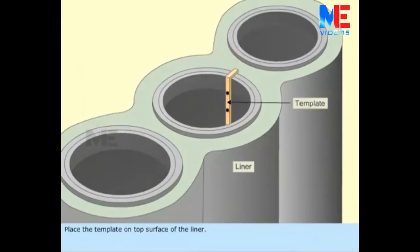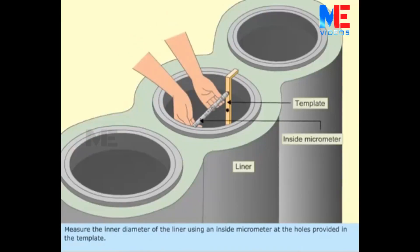Place the template on top surface of the liner. Measure the inner diameter of the liner using an inside micrometer at the holes provided in the template.